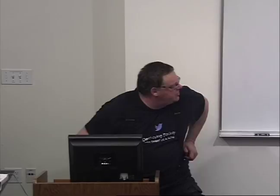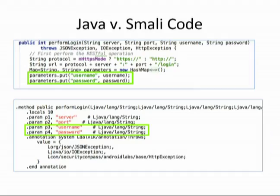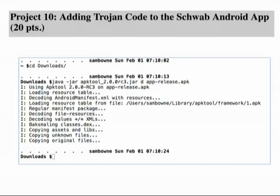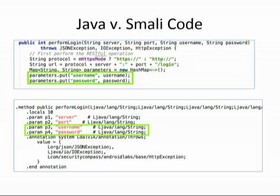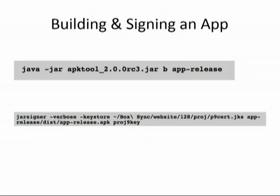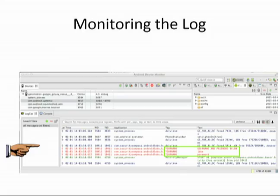With APK tool you run: java -jar apktool d <apk>, and that will unzip it like a zip file and extract all the Smali files so you can examine them. The Smali files are a little more hard to read than Java, but not by much. Then you rebuild it with 'b', sign it with a signature, and you can put it back on the device and run it.